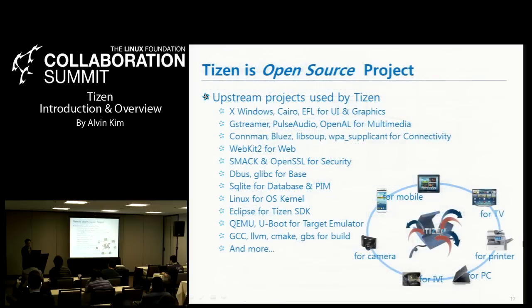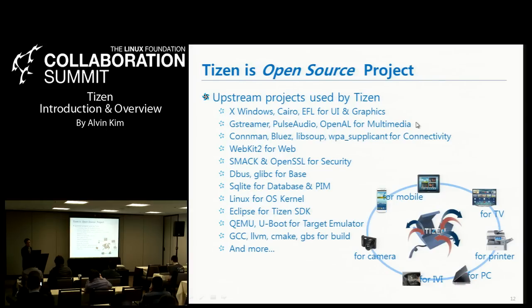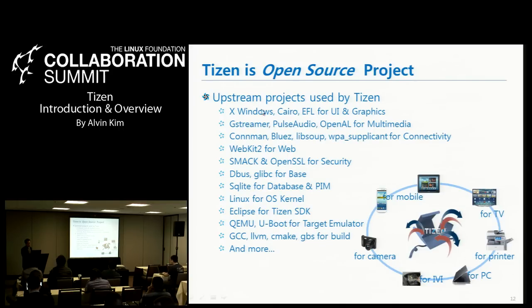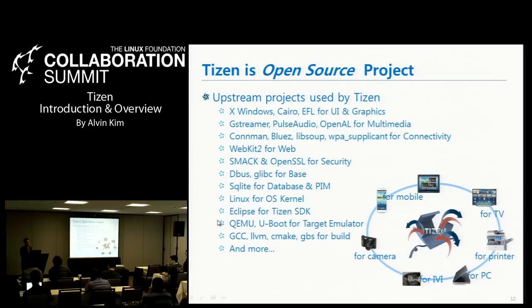Tizen is an open source project. As of 2.0, many upstream projects are being used by Tizen. For UI graphics, Wayland, Cairo, and EFL — Enlightenment Foundation Libraries — are used. For multimedia, GStreamer, PulseAudio, and OpenAL. For connectivity, ConnMan, BlueZ, libsoup, and wpa_supplicant. For web, WebKit2. For security, SMACK and OpenSSL. There are many, many modules being used by Tizen.